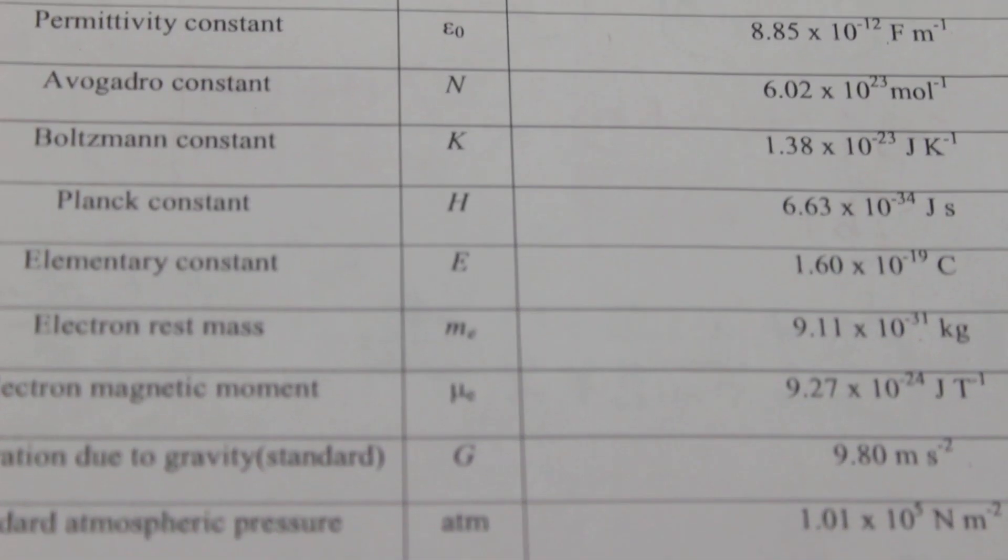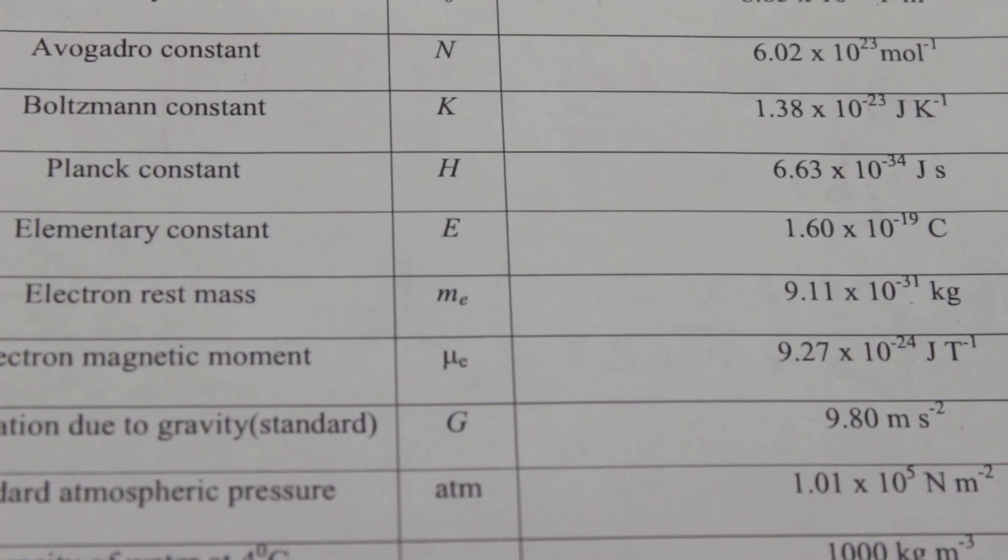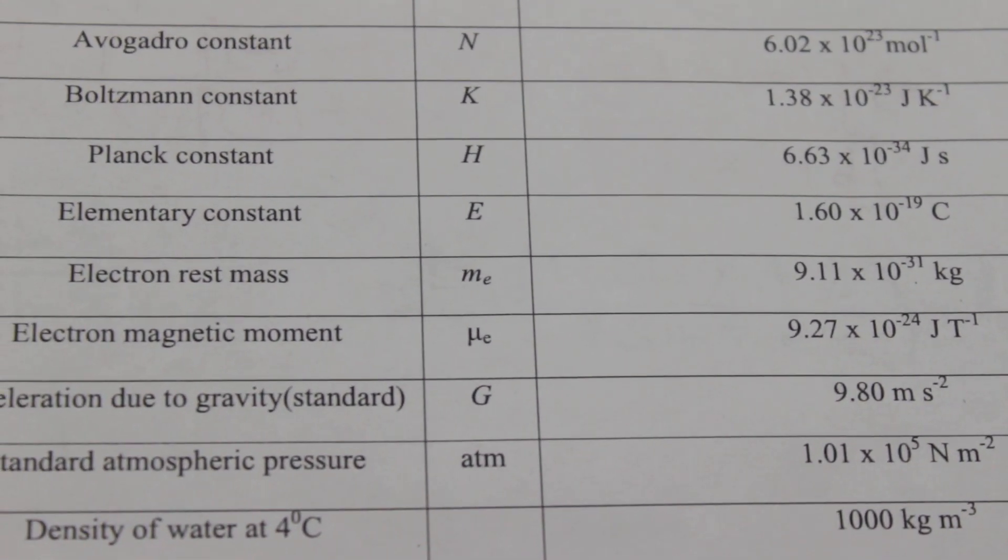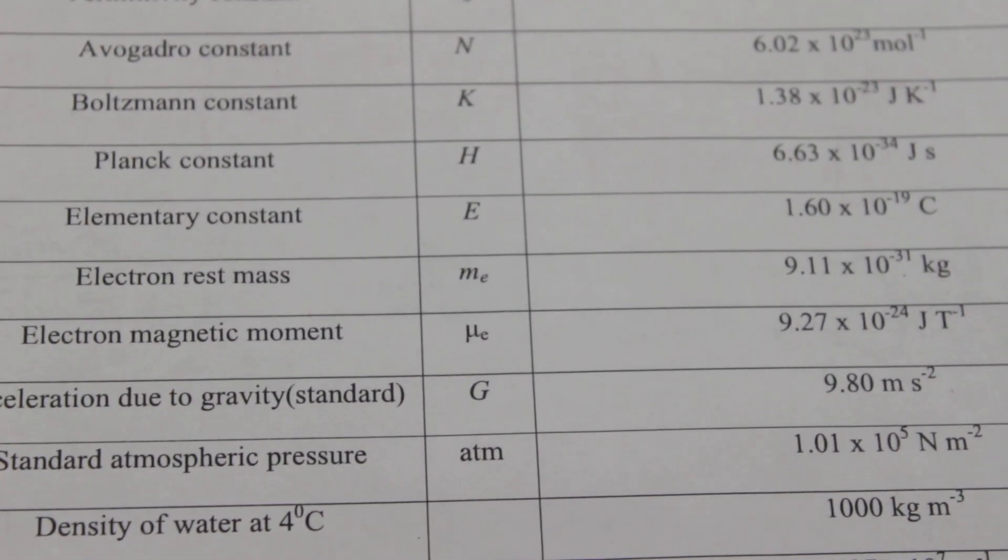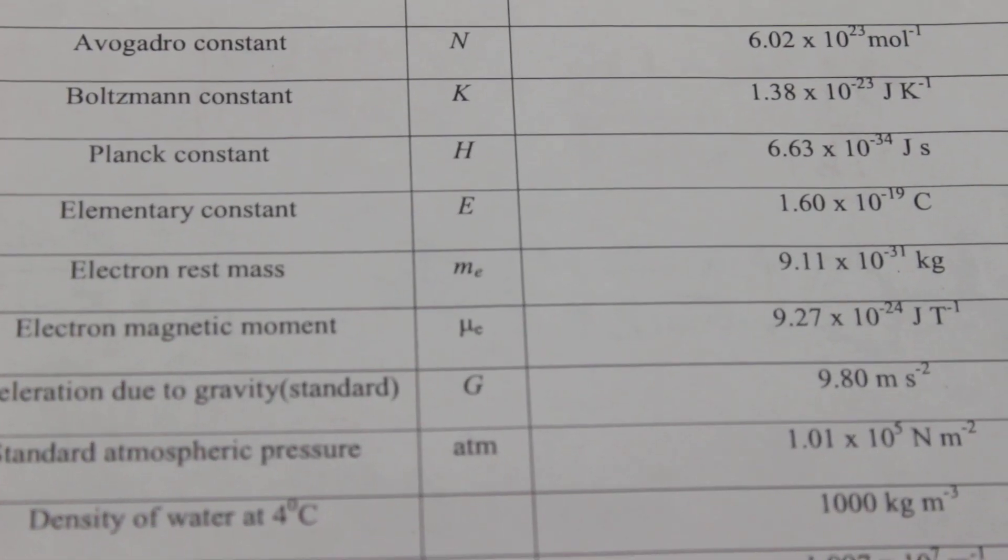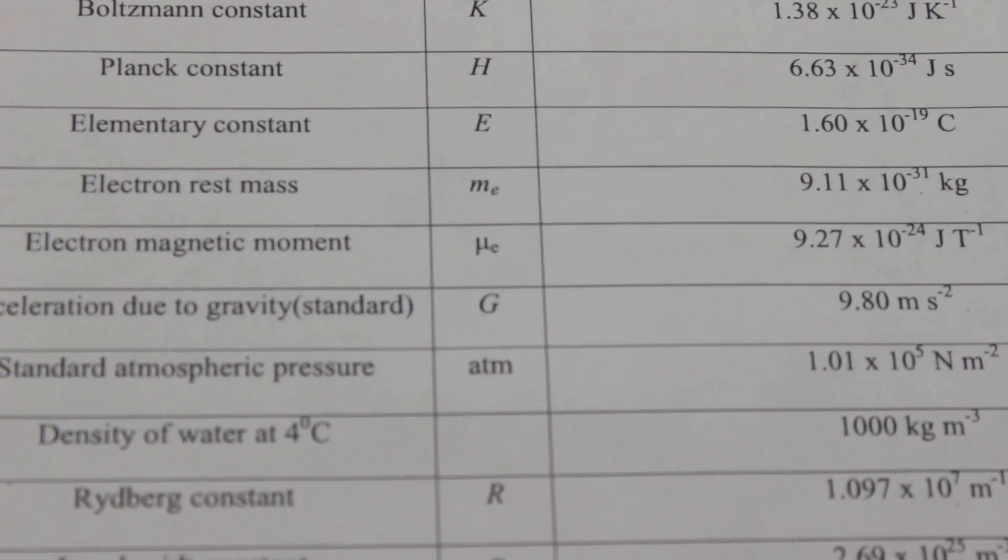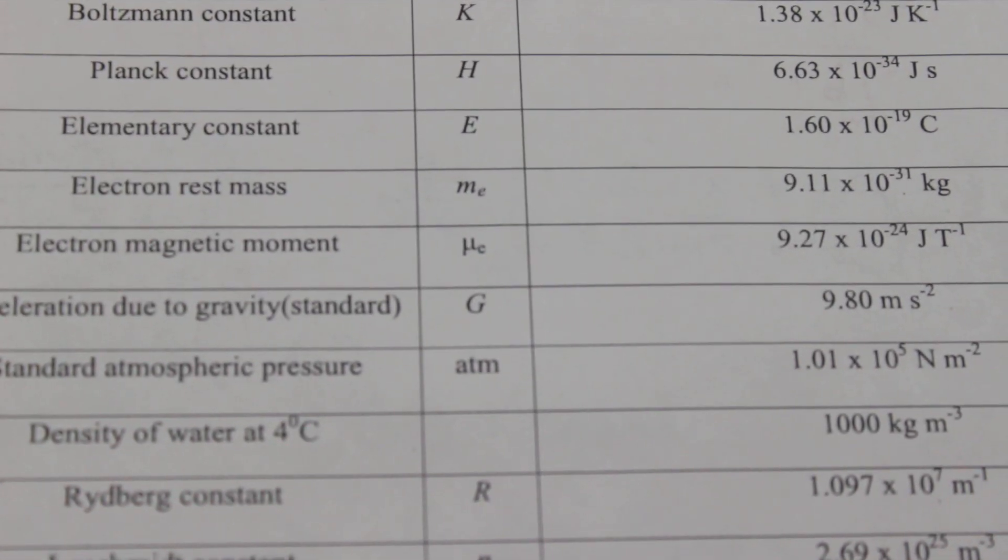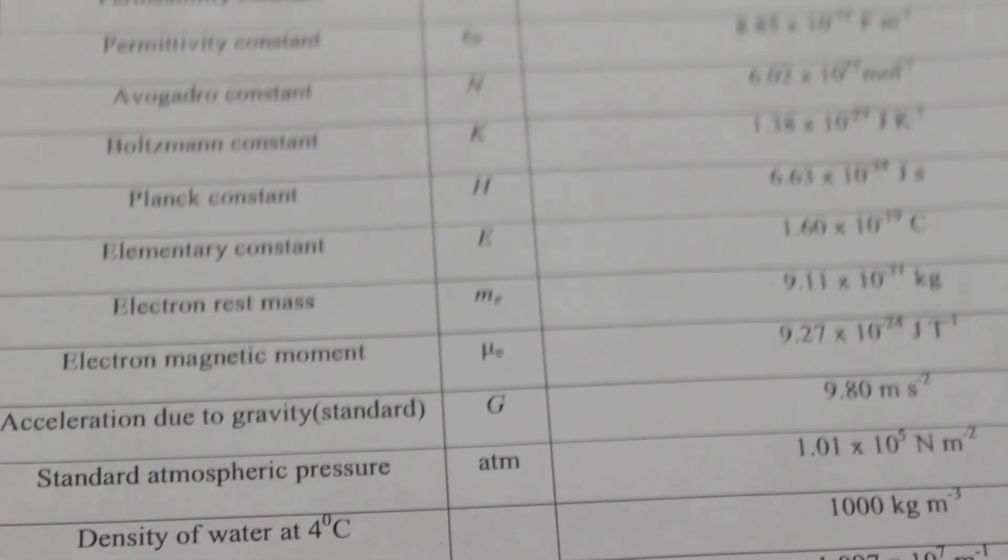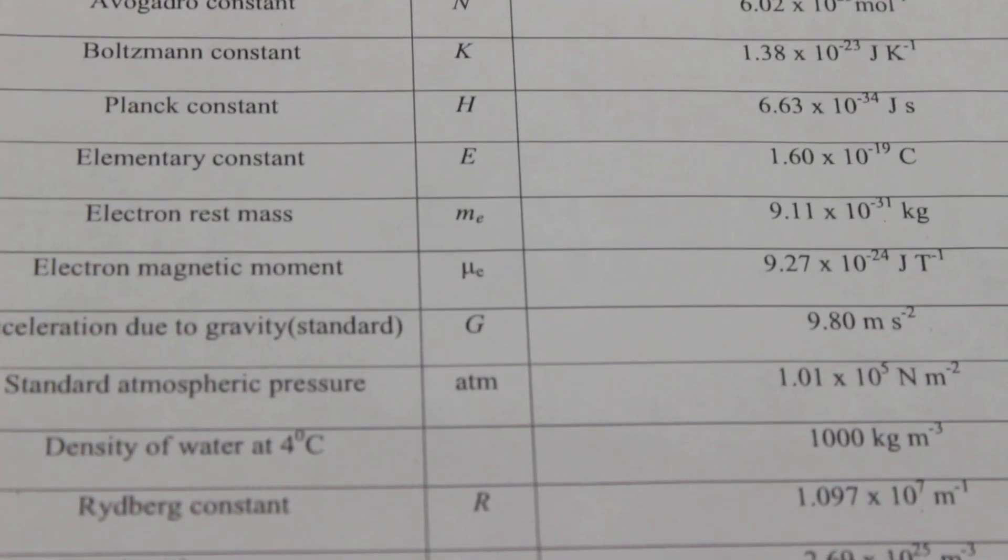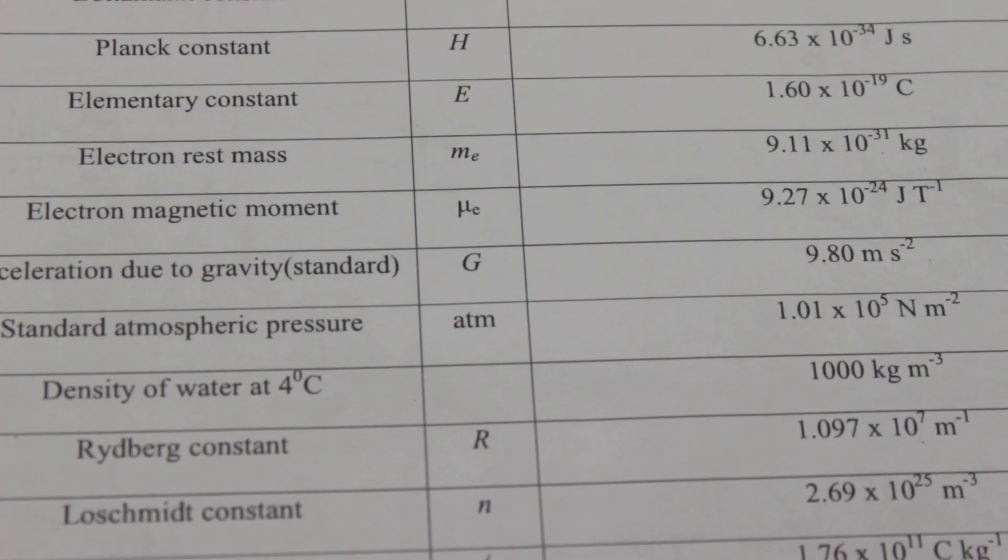Permittivity constant epsilon 0, more specifically free space permittivity, that is 8.85 times 10 to the power minus 12. Next is Avogadro number, 6.02 times 10 to the power 23. Next comes Boltzmann constant, which is 1.38 times 10 to the power minus 23. Planck's constant H, which is 6.63 times 10 to the power minus 34.